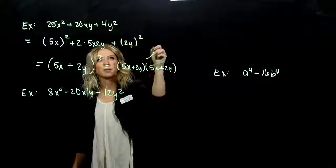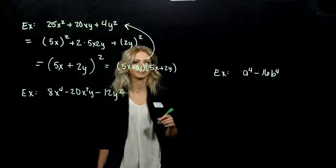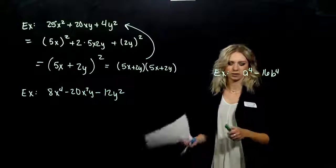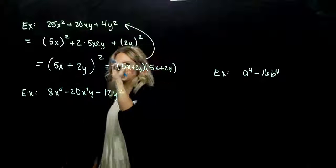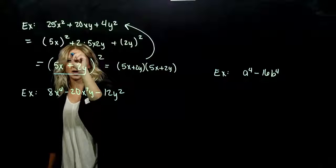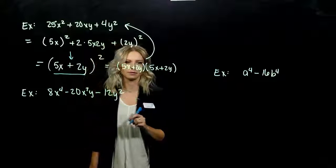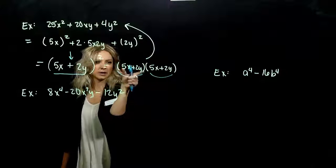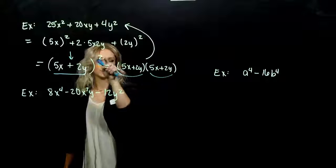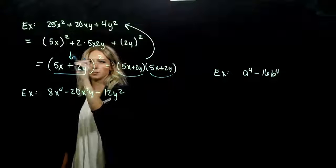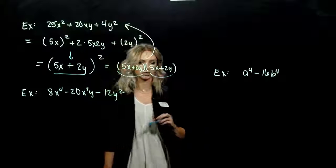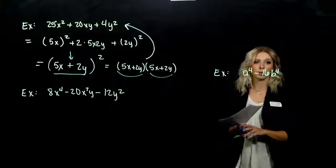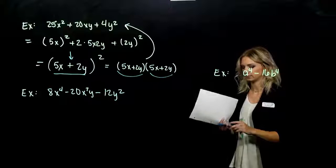FOIL it out — (5x+2y)(5x+2y) — and make sure we get back to our original. The really important thing to remember: when we're squaring a sum or difference, it means that entire quantity times itself twice in total. We cannot distribute the square over a sum — that won't work. We have to FOIL it out. Super important to remember for this class.